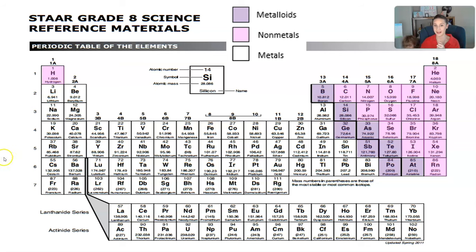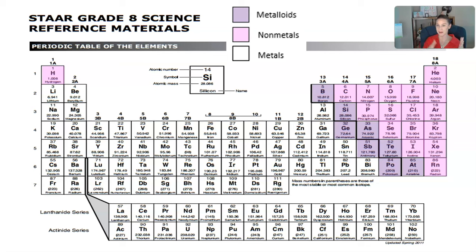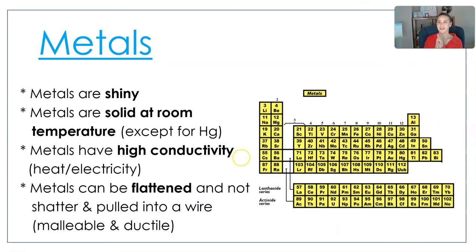Not every periodic table has all of that information readily available, but this one does. On this periodic table I've highlighted the metals, nonmetals, and metalloids for you. You might not see the highlight in the eighth grade STAR periodic table, but if you hover over and click into an element you might get more information. You need to know the metals, nonmetals, and metalloids — commit that to memory.